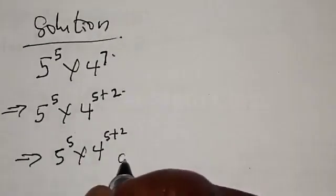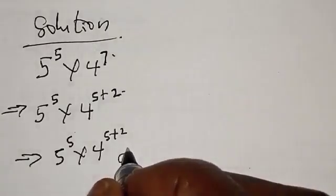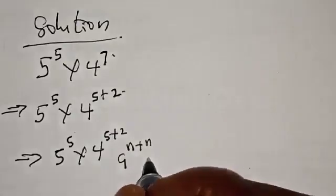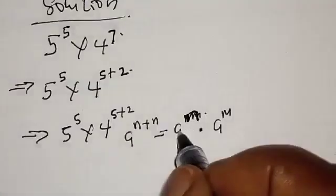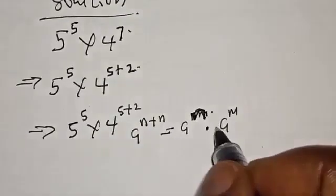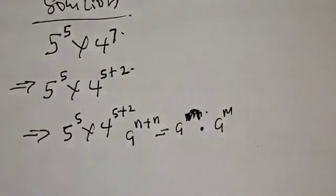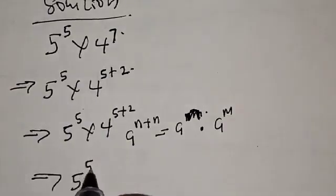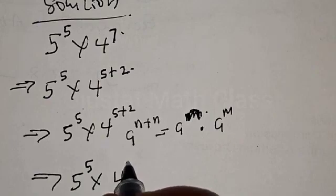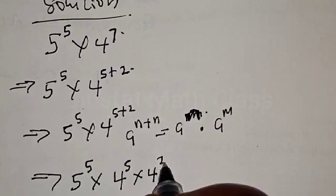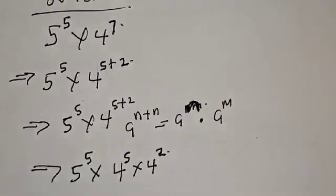Using the exponent rule: if you have a raised to power m plus n, it equals a raised to power m multiplied by a raised to power n. This implies that we have 5 raised to power 5 multiplied by 4 raised to power 5, multiplied by 4 raised to power 2.